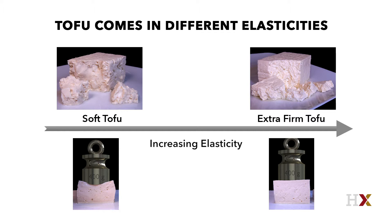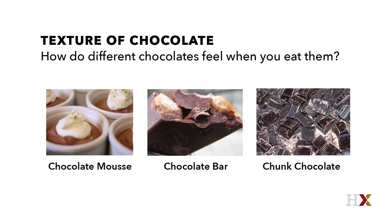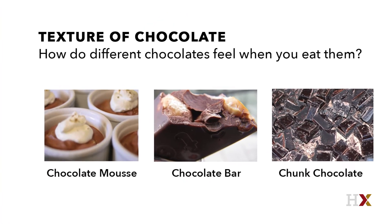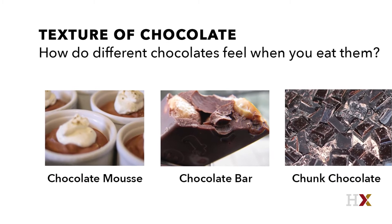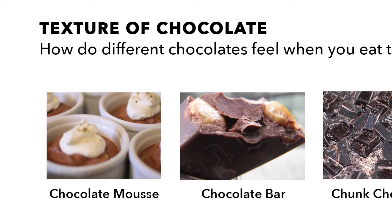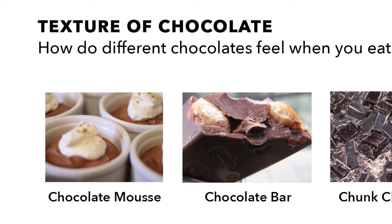A soft tofu is much softer. It's much easier to chew. And when you finish the steak and your tofu, you have dessert. You have chocolate. It too comes with different textures. Chocolate mousse — it's light, it's airy, it's very easy to chew. It's a very low elastic material.